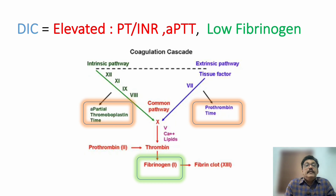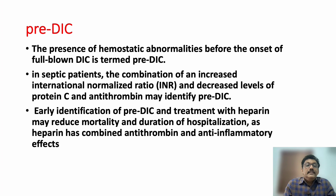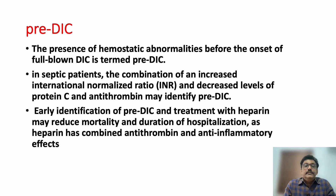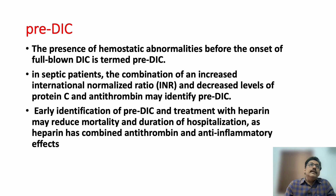In DIC, the intrinsic and extrinsic coagulation pathways are both damaged and fibrinogen levels are low. There is also a condition called pre-DIC, which can be diagnosed earlier. Before PT/INR, aPTT, and fibrinogen become abnormal, elevation in INR and decreased levels of protein C and antithrombin can indicate a patient is progressing toward DIC. The advantage is that heparin can be used in this early thrombotic phase — it cannot be used in the late hemorrhagic phase.